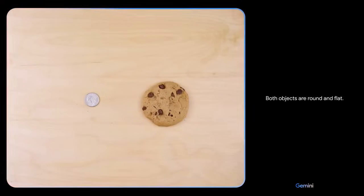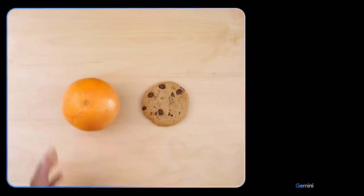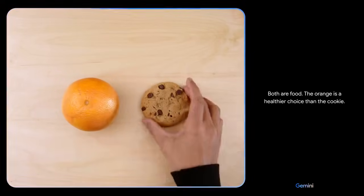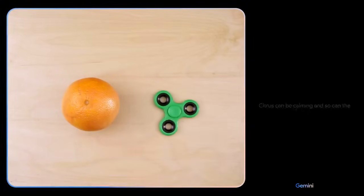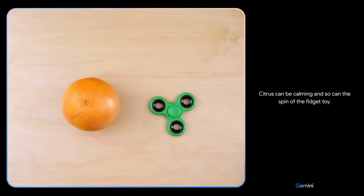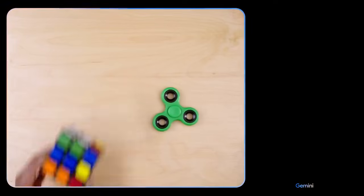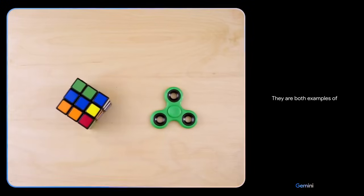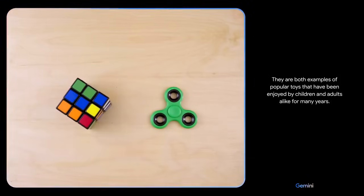Both objects are round and flat. There you go. Both are food. The orange is a healthier choice than the cookie. Citrus can be calming, and so can the spin of the fidget toy. They are both examples of popular toys that have been enjoyed by children and adults alike for many years.